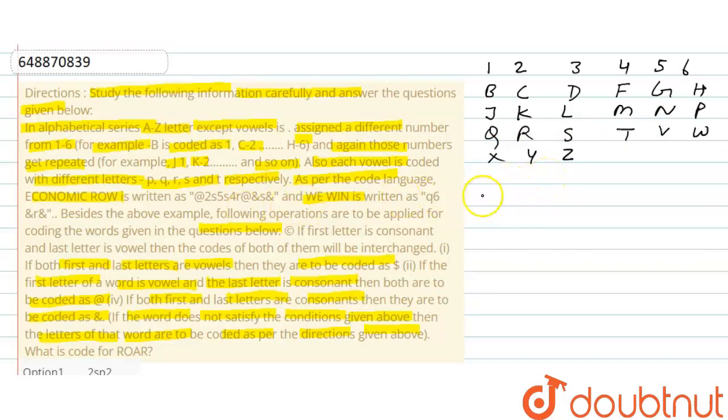Vowels: A code is P, E code is Q, I code is R, O code is S, U code is T.